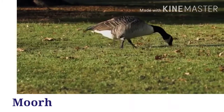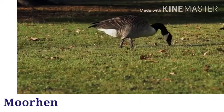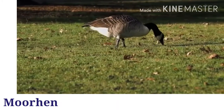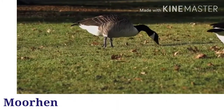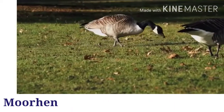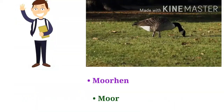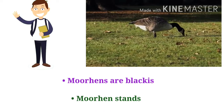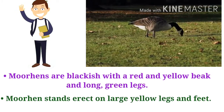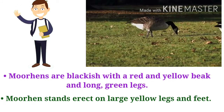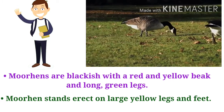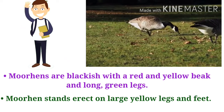Do you know this bird? This is a moorhen. M-O-O-R-H-E-N. Let's introduce the moorhen. Moorhens are blackish birds with a red and yellow beak and long green legs. The moorhen stands erect on large yellow legs and feet.